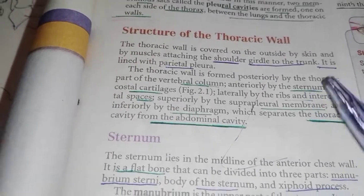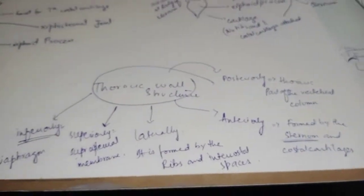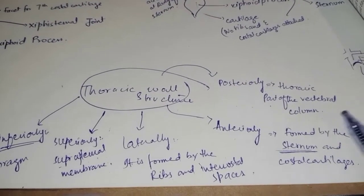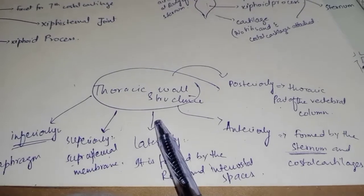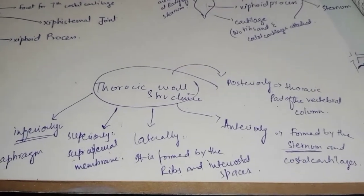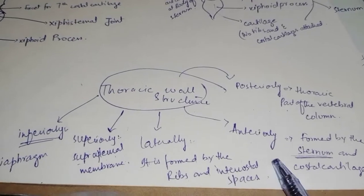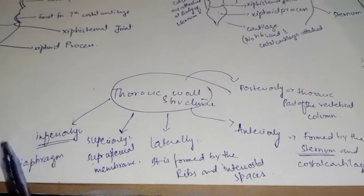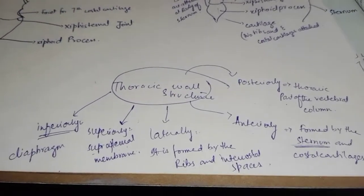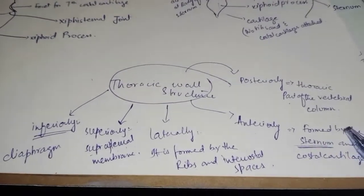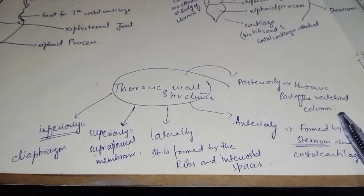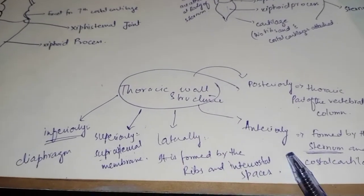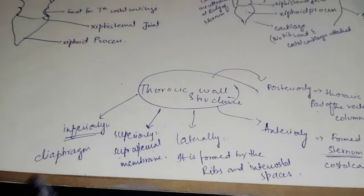To summarize the formation of the thoracic wall: posteriorly it is the thoracic part of the vertebral column; anteriorly the sternum and costal cartilages; laterally the ribs and intercostal spaces; superiorly the suprapleural membrane; and inferiorly the diaphragm.